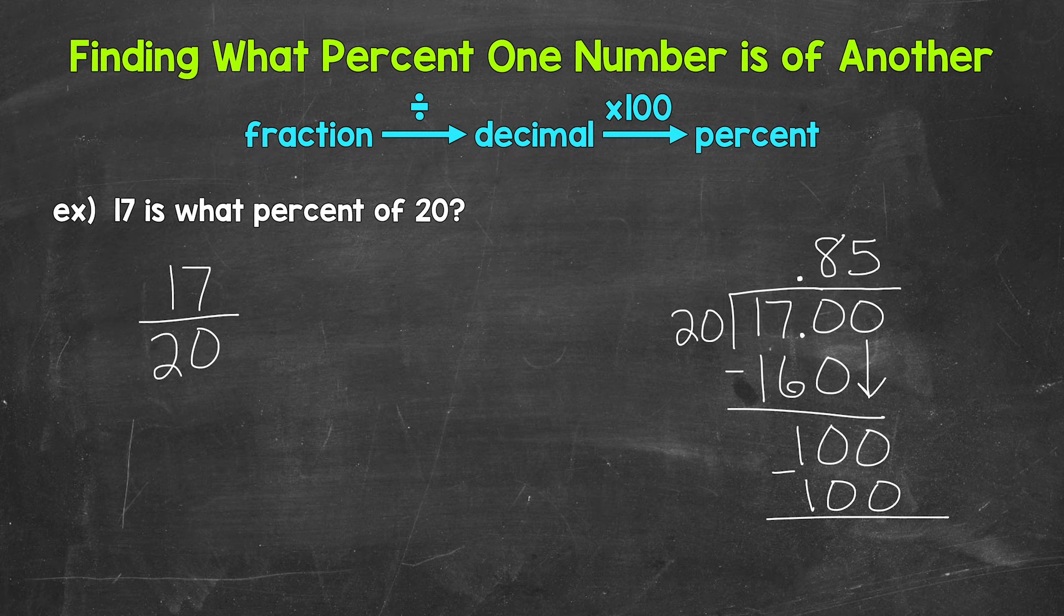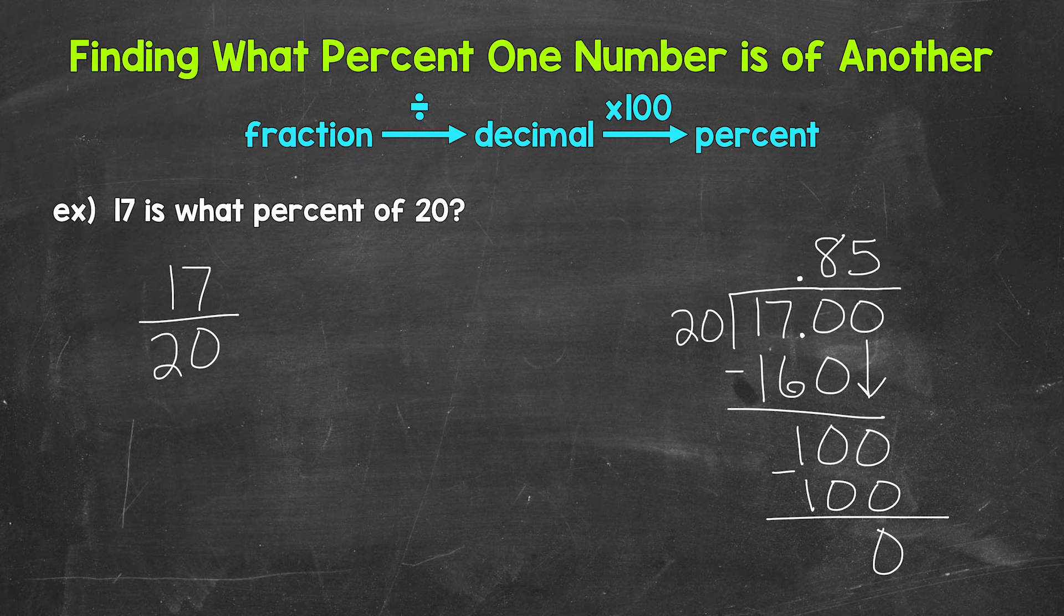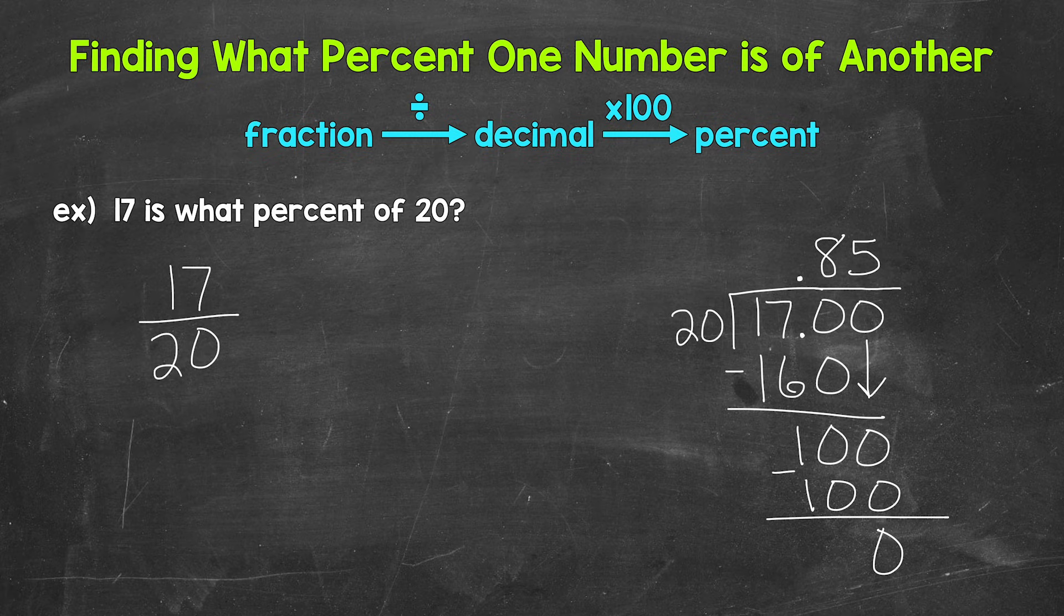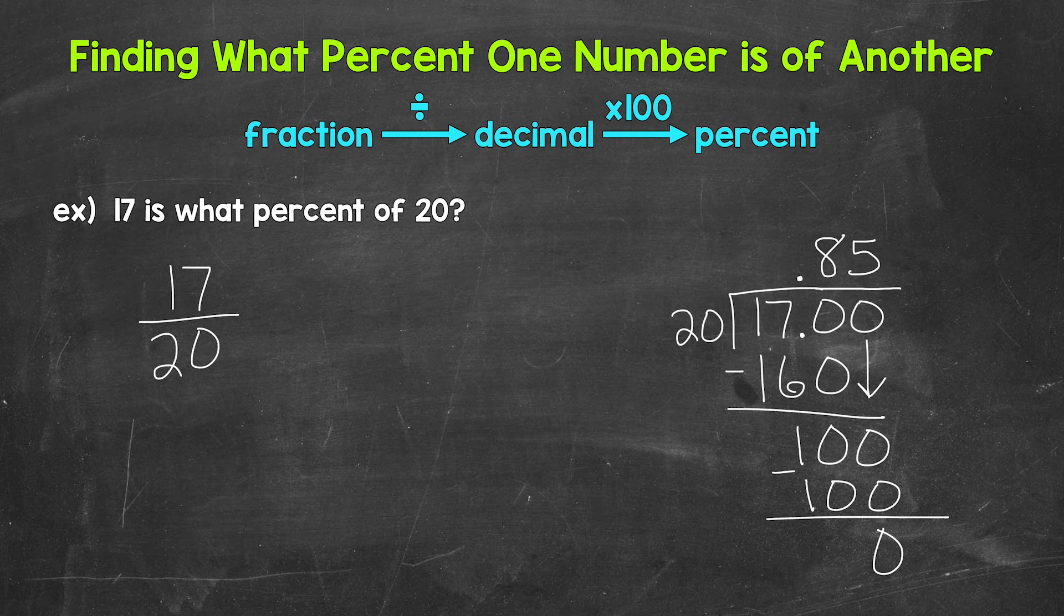Subtract. 100 minus 100 is zero. So now we have that clean cut zero there at the bottom. We went all the way over within our division problem, so we are done. 17 divided by 20 equals 0.85.